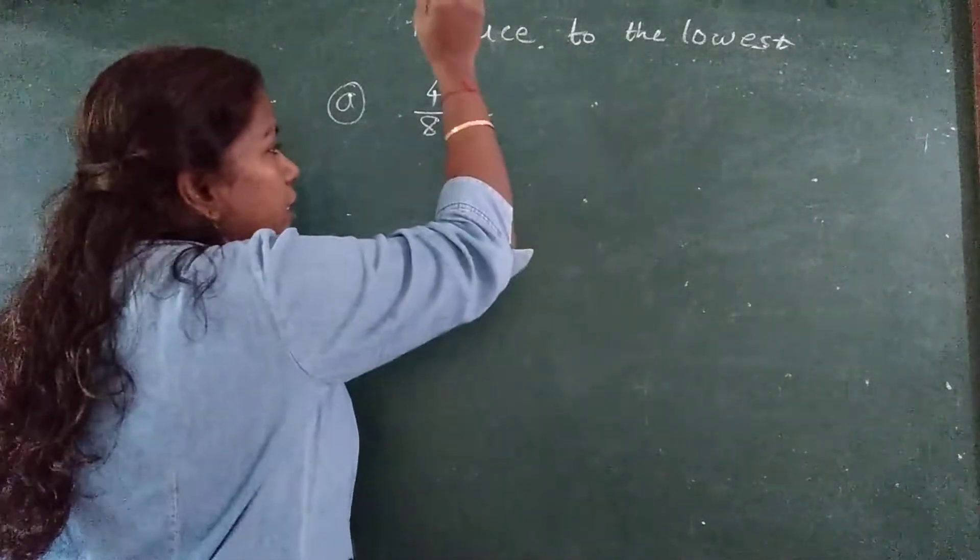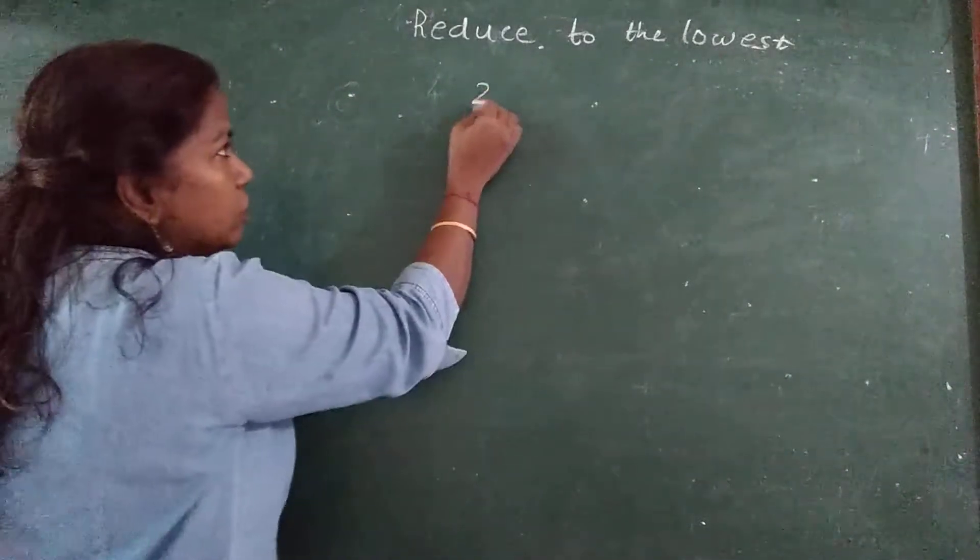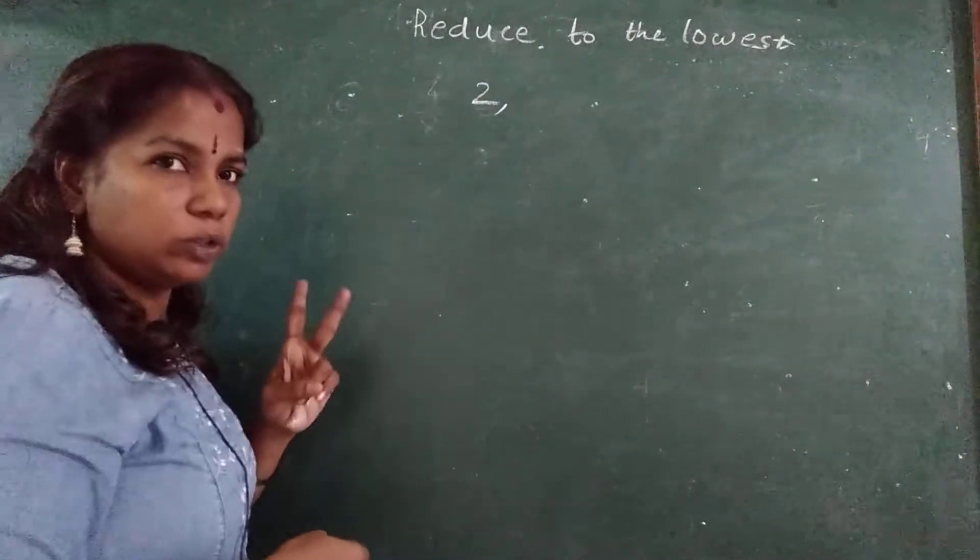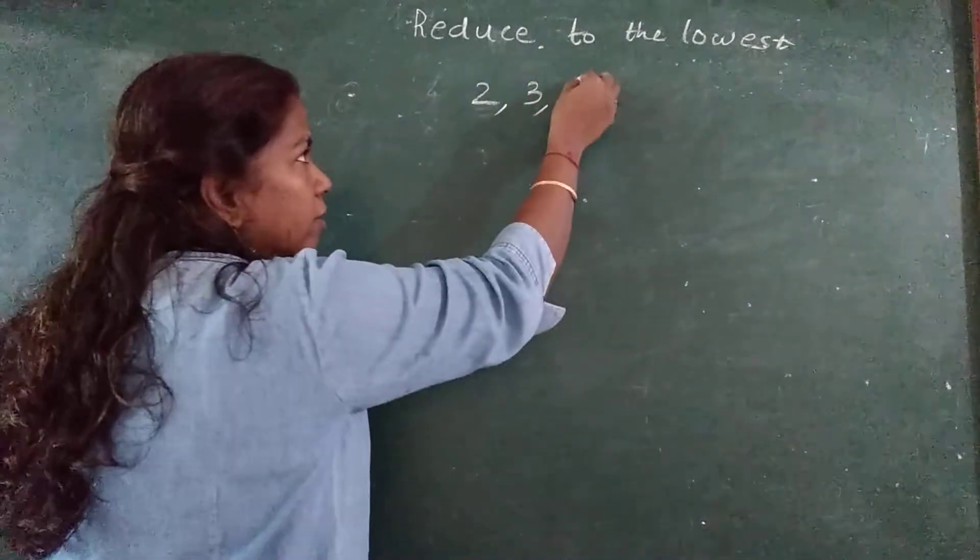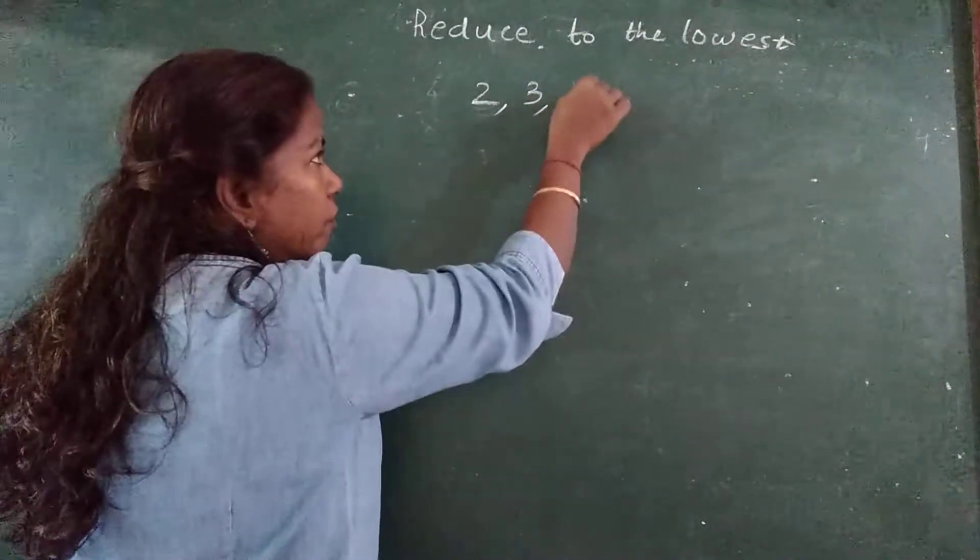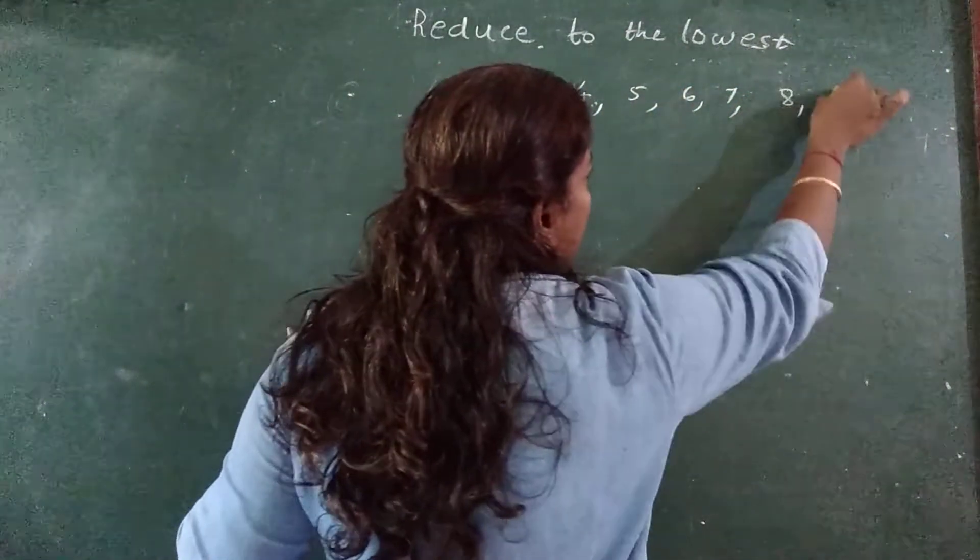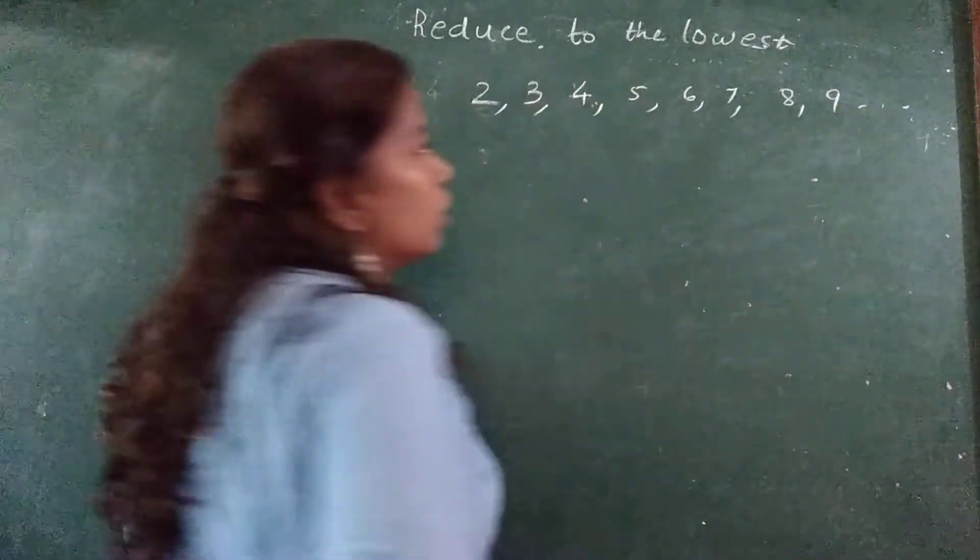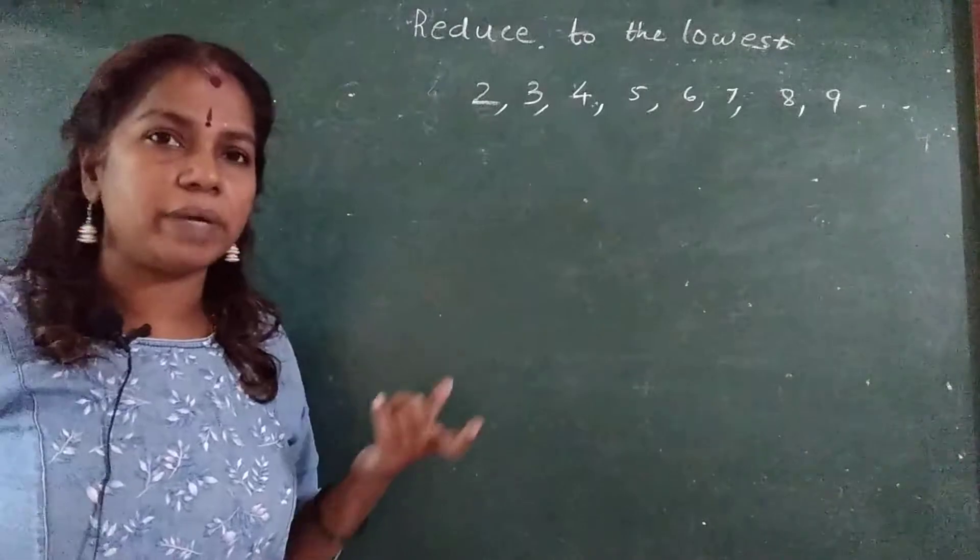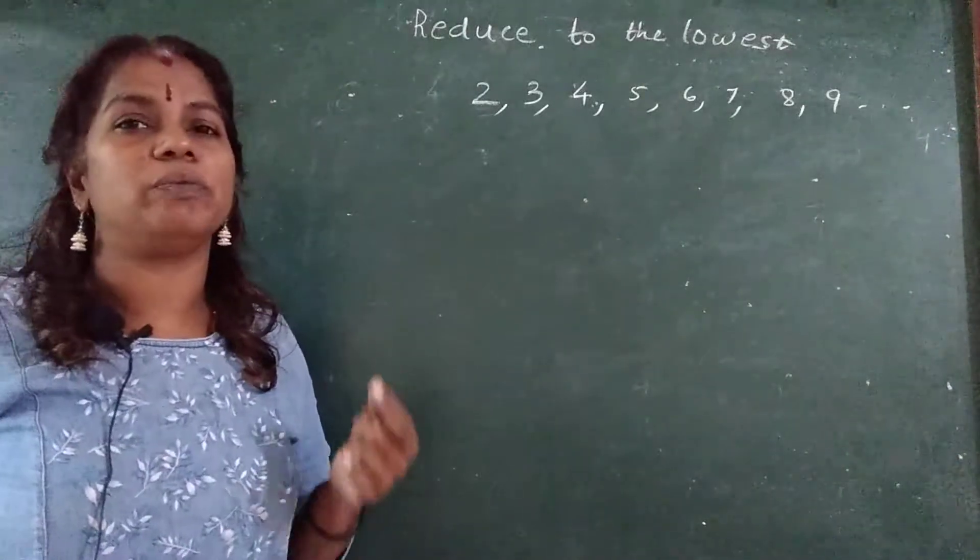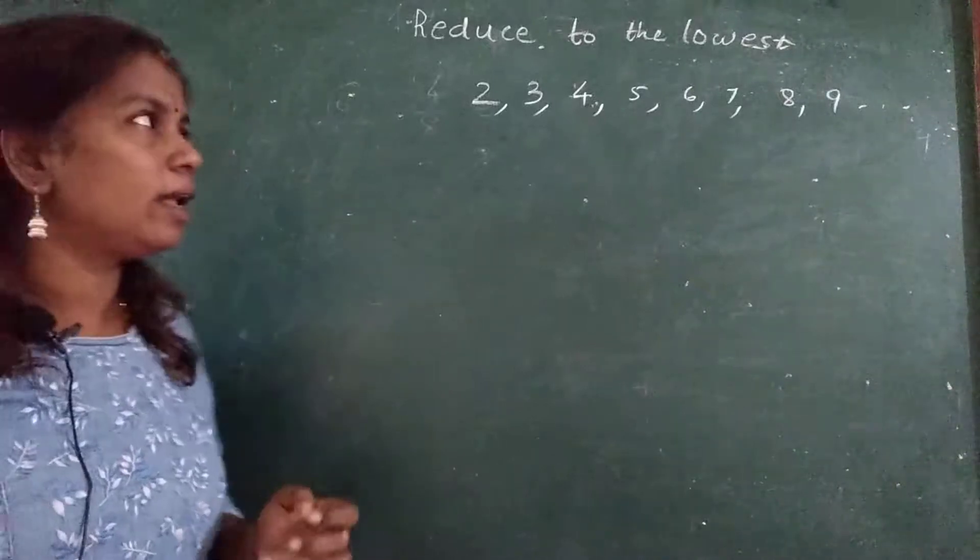Whenever I start, first thing what you have to see, I will write here before that. First you have to see whether it is going with 2, then 3, then 4, 5, 6, 7, 8, 9. Go step by step. When you will do step by step, there are chances that you make less mistakes. You can avoid mistakes.